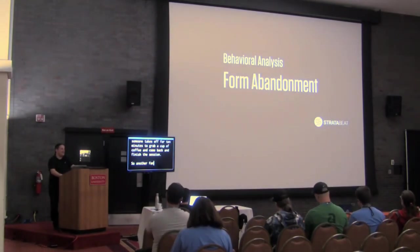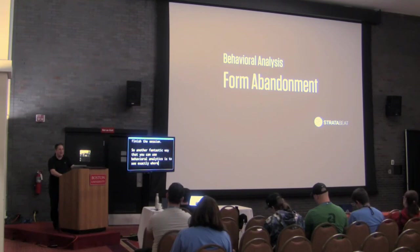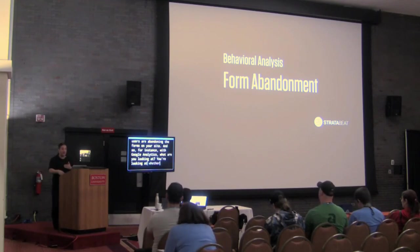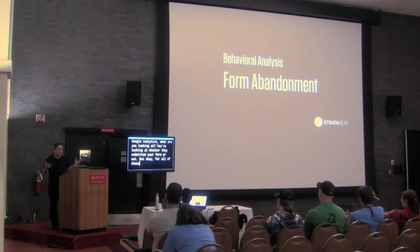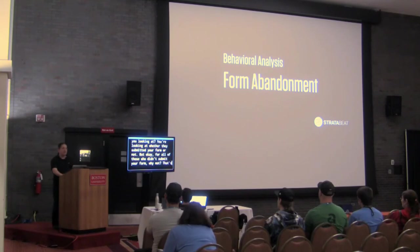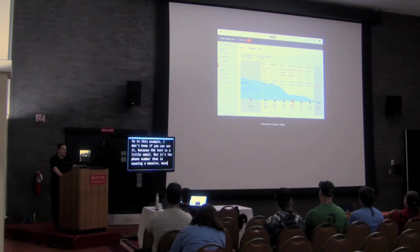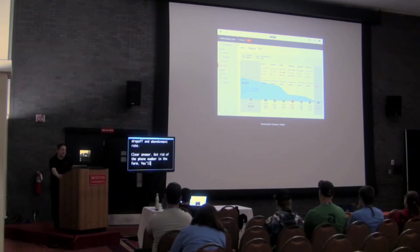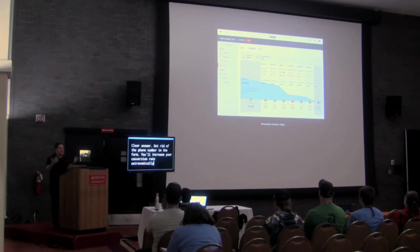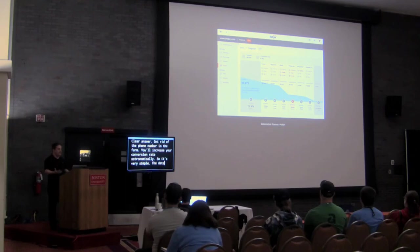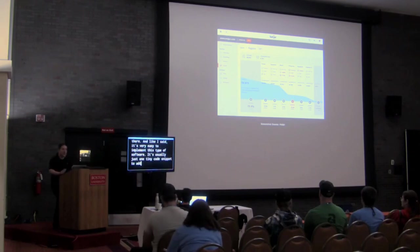Another fantastic way to use behavioral analytics is to see exactly where your users are abandoning the forms on your site. With Google Analytics, you're looking at whether they submitted your form or not. But for all of those who didn't submit — why not? That's where behavioral analytics comes in, because you can see exactly what's happening in each field. In this example, it's the phone number that is causing a massive, massive drop-off and abandonment rate. Clear answer: get rid of the phone number in the form, and you'll increase your conversion rate astronomically.